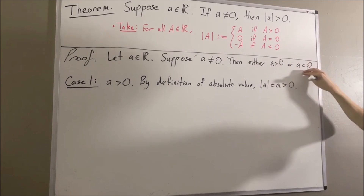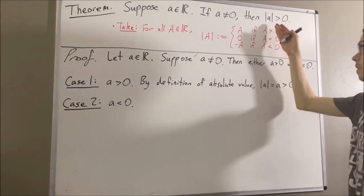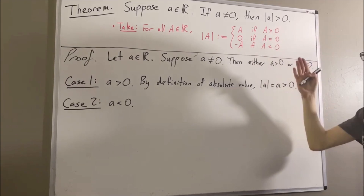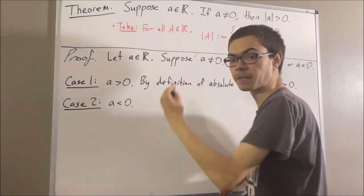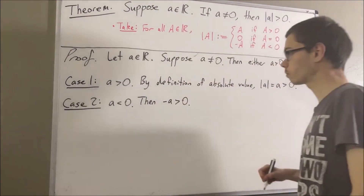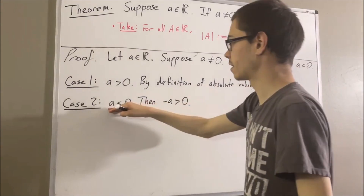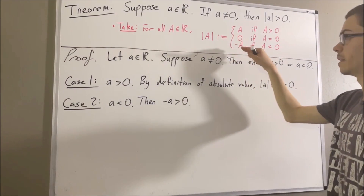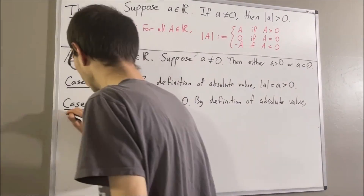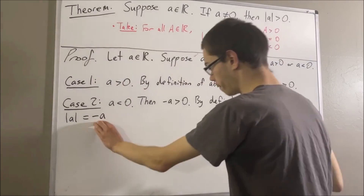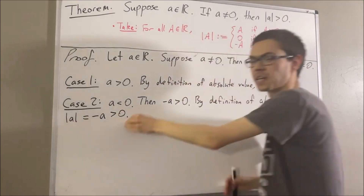Now let's move on to the case where A is less than zero. Again, we want to prove that the absolute value of A is greater than zero. Since A is less than zero, this means that negative A is greater than zero. Applying the definition of absolute value, since A is less than zero, the absolute value of A is defined to be negative A. And the negative of A is greater than zero, so the absolute value of A is greater than zero, as required.